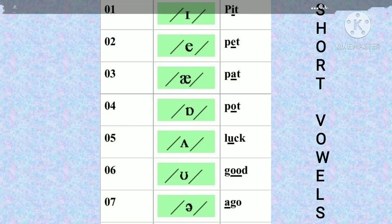Here I am showing the 7 short vowel sounds in English. One thing I would like to remind you: you should represent the phonetic alphabet within the slanted lines, as shown in this chart. The first short vowel is /ɪ/, represented with the symbol I. /ɪ/ as in 'pit' — in the word 'pit', the second sound is /ɪ/. The second sound is /e/ as in 'pet' — in the word 'pet', the second sound is /e/.